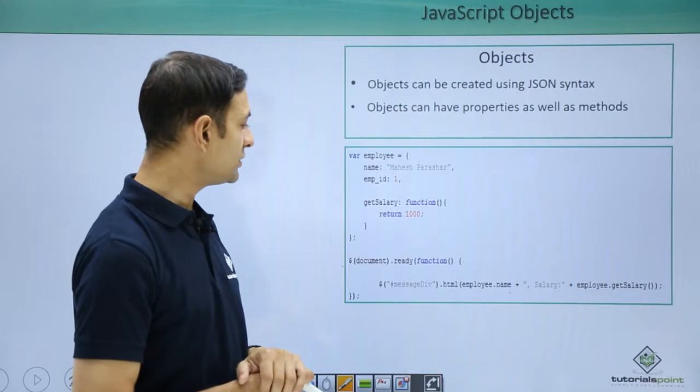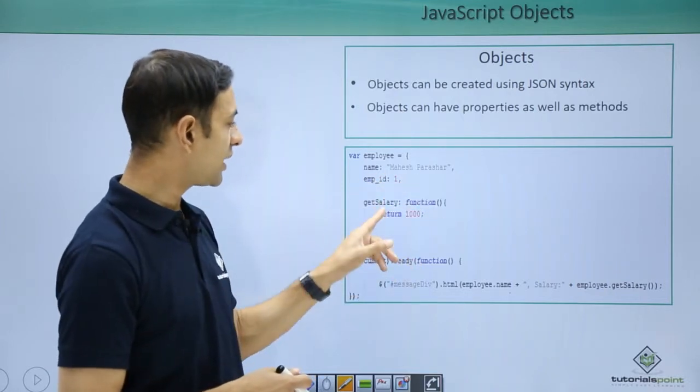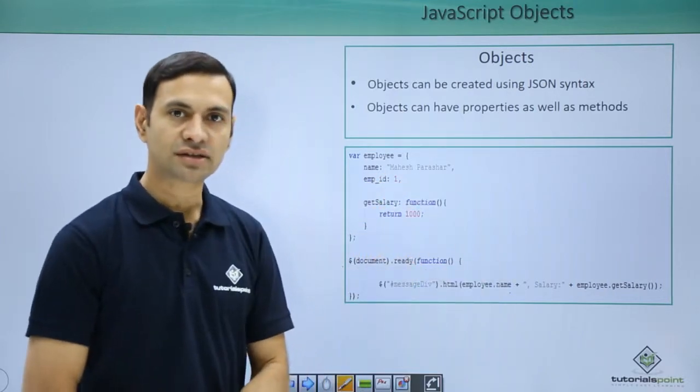So it will show the output as your name Mahesh Parasha and salary as 1000. Let's see this example practically.